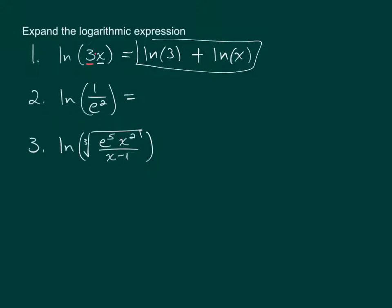The second example here, the natural log of 1 over e squared. I can separate this out into two separate logs. I have a base 1 in the numerator and a base e squared, or a base e in the denominator. So I can expand that out to be the natural log of 1 and the natural log of e squared.